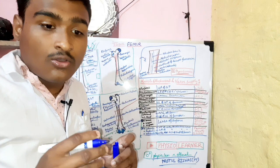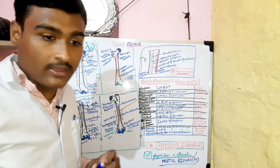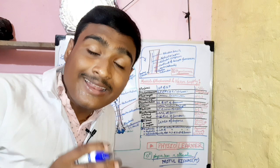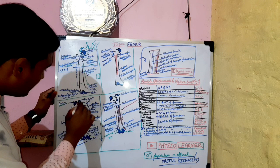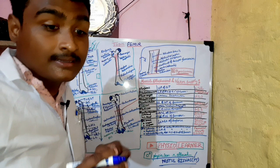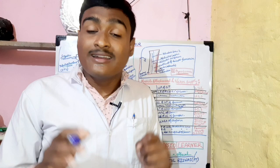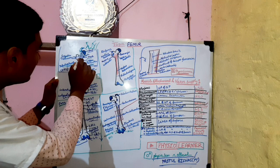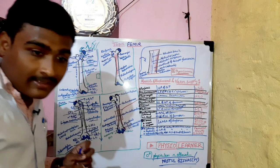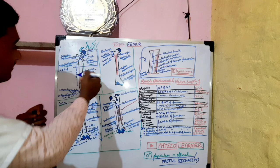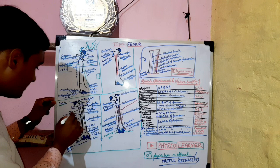The lateral trochanter is a conical eminence — it is cone-shaped. This is the lesser trochanter. The intertrochanteric line is on the anterior surface, and the intertrochanteric crest is on the posterior surface. The shaft is cylindrical in shape.